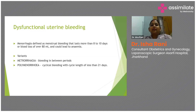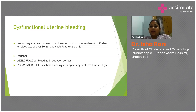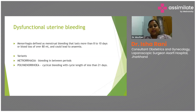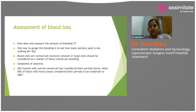Variants of menorrhagia or dysfunctional uterine bleeding include metrorrhagia, in which bleeding happens in between cycles, and polymenorrhagia, where the cycle length is reduced. Both of these also amount to increased blood loss in the body.